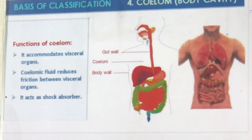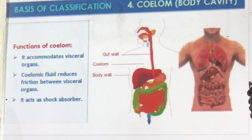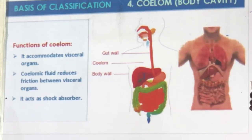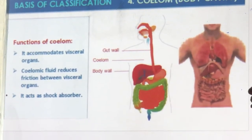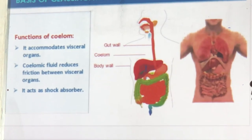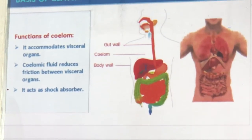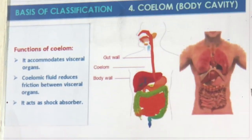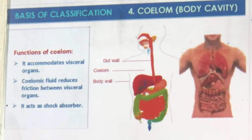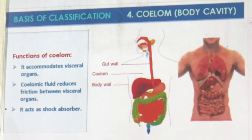What does the coelom do? It accommodates visceral organs, your internal organs are well developed, and there is liquid inside so friction is reduced — it acts as a shock absorber. As a result, the organs function very well.